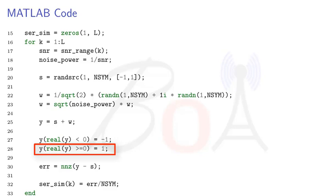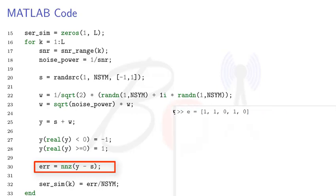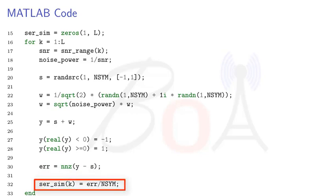Next, we compute the error vector by subtracting the detected symbol vector with transmitted symbol vector. In the resultant vector, the zero value will correspond to no error and one value will correspond to erroneous detection. We use MATLAB nnz command to find the count of non-zero values in the vector Y minus S and thereby obtain the total number of errors. Finally, we compute the symbol error rate by dividing the number of errors by the total number of transmitted symbols. This will give us the simulated symbol error rate for an SNR value.